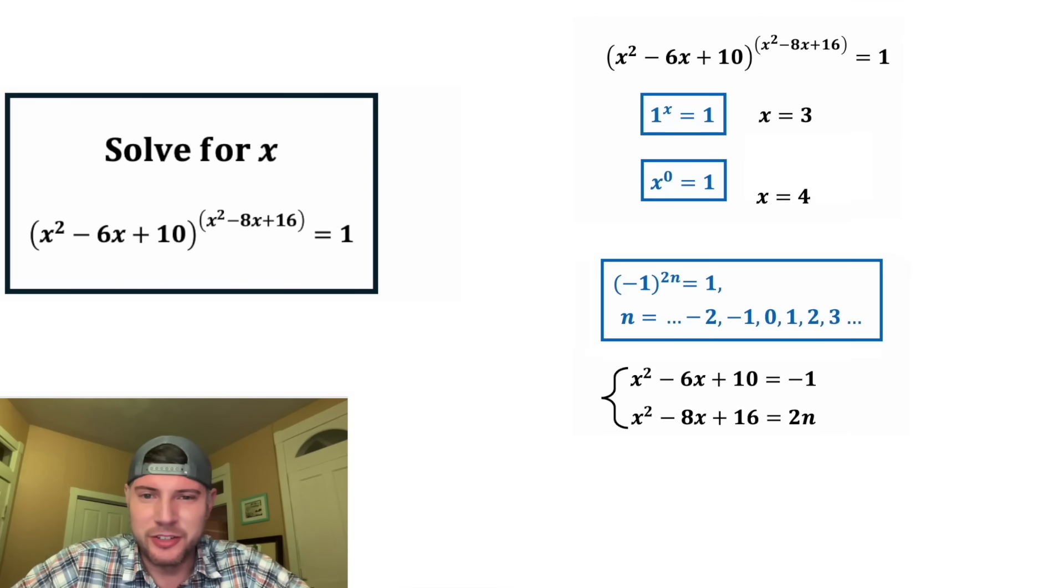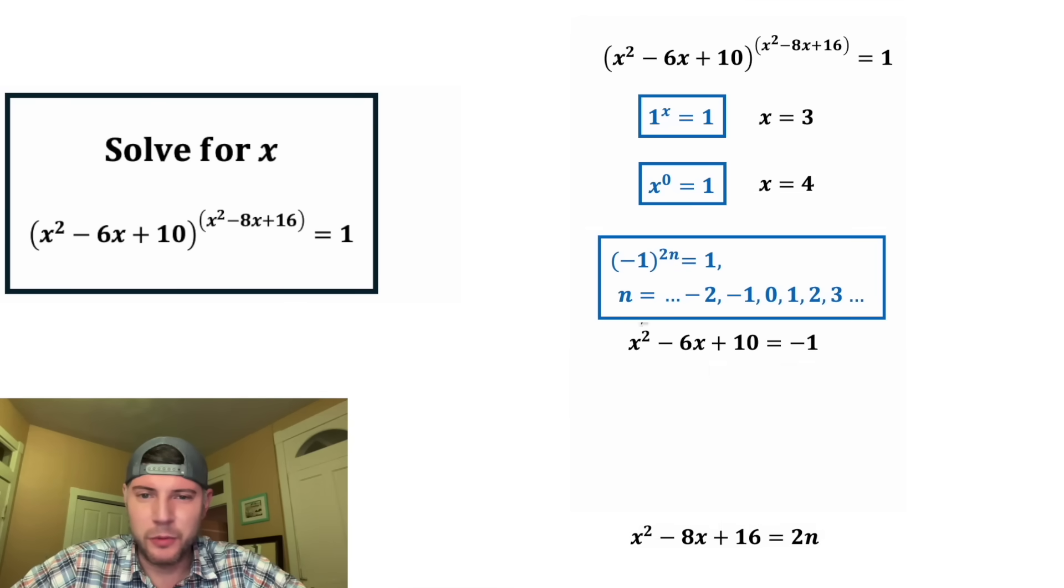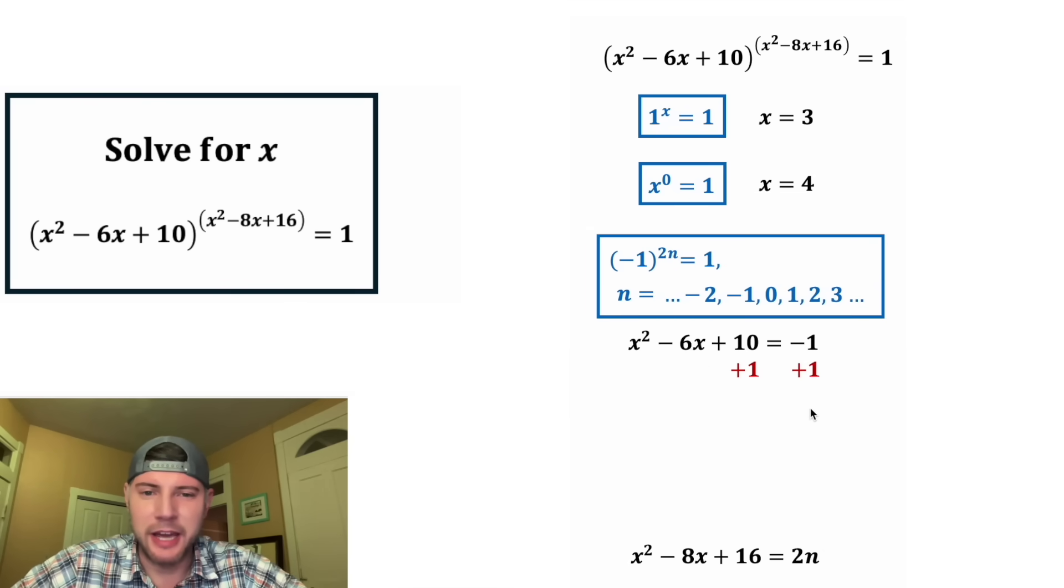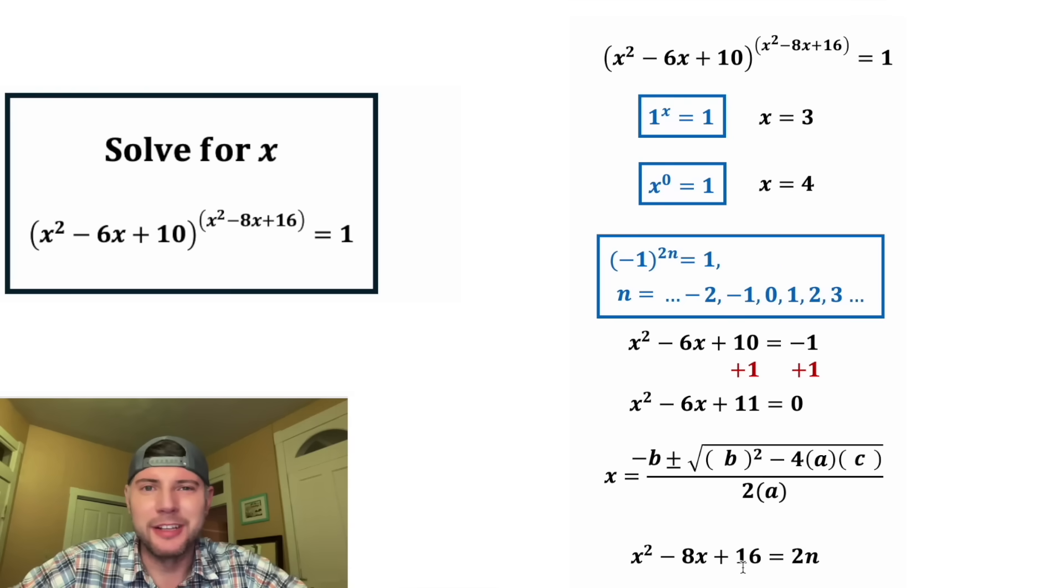Now let's figure out this third scenario. First, let's find out where the base is negative 1. We can add 1 to both sides and we get x squared minus 6x plus 11 equals 0. And then if we try to factor this trinomial, we can definitely get the x squared with an x and x, but there's nothing that's going to add to negative 6 and multiply to 11. So we're going to have to do a quadratic formula. a is equal to 1, b is equal to negative 6, and c is equal to positive 11.